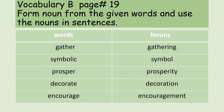Vocabulary B, page number 19 — form nouns from the given words and use the nouns in sentences. The words in the left column are some verbs and one adjective. From these words you are asked to form nouns. Gather is an action, so gathering becomes a noun — a thing, an assembly of people. Similarly, symbolic is an adjective, and from it we form the noun symbol — a sign or emblem representing something.